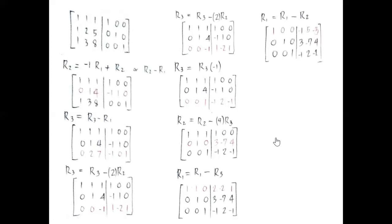Finally, to get the identity matrix in the left portion, we subtract R sub 1 minus R sub 2. The second and third rows remain as (0,1,0 | 3,−7,4) and (0,0,1 | −1,2,−1). The result in the first row is (1,0,0 | −1,5,−3).